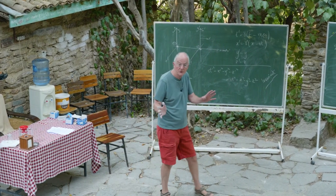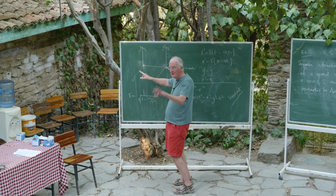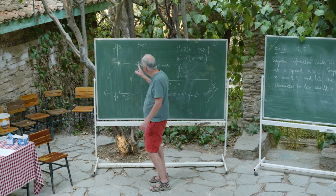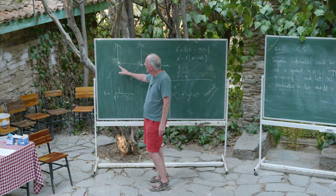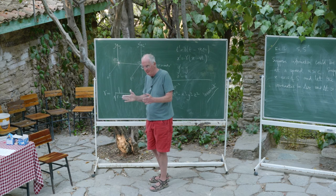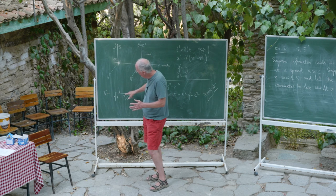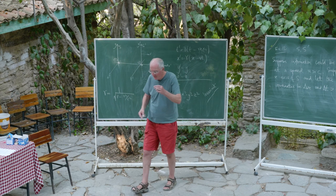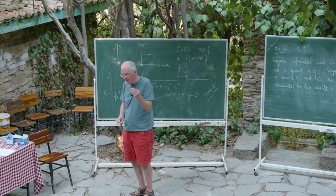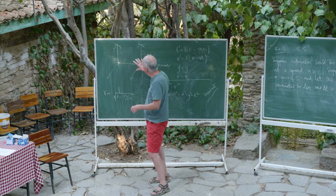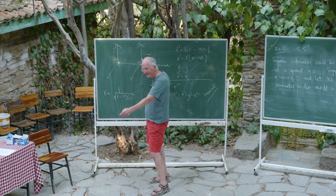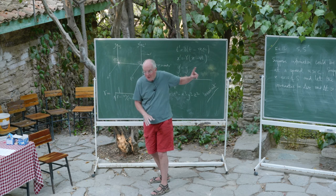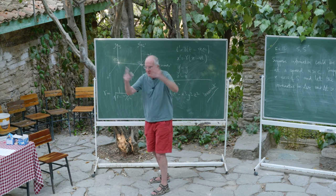A good question: what's the difference between this v and that u? The velocity v is the relative velocity of two inertial frames, and we've already seen it must be less than the velocity of light. But this argument is more general: it says not just that no inertial frame can travel faster than light, but that no information at all can travel faster than light.